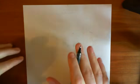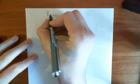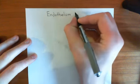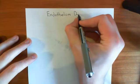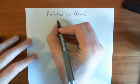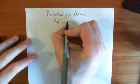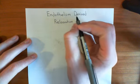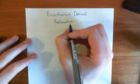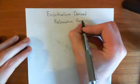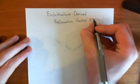Welcome to this next video in the playlist on the cardiovascular system. In this video, we're going to look at endothelium-derived relaxation factor, which is more commonly now known as nitric oxide. Originally it was not known that it was nitric oxide, so it was just called the endothelium-derived relaxation factor, or EDRF, because we knew the endothelium was releasing something that was causing the relaxation of the smooth muscle around the endothelium in blood vessels, but we didn't know what it was.